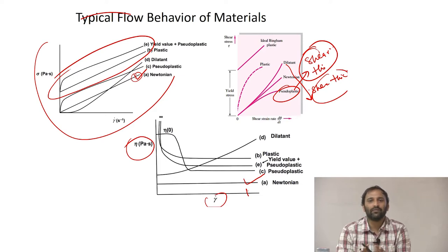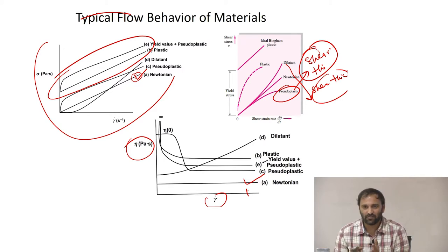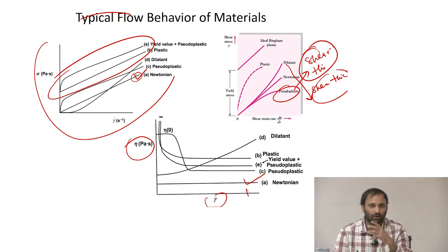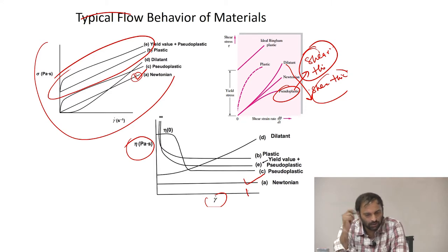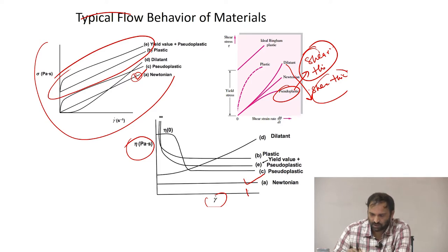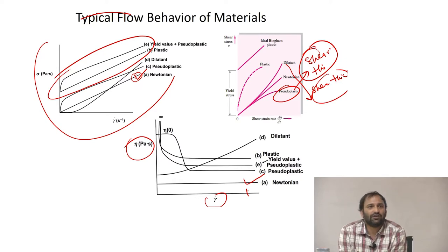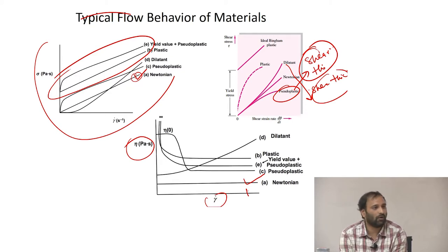There are different classes of fluids, and their viscosity need not be constant — it could vary as a function of shear rate. Depending on whether viscosity increases, decreases, or remains constant, fluids can be categorized accordingly. Most fluids encountered in daily life or industrial processes fall into some of these categories. One interesting question is: can a single fluid exhibit Newtonian, shear thinning, and shear thickening behavior?